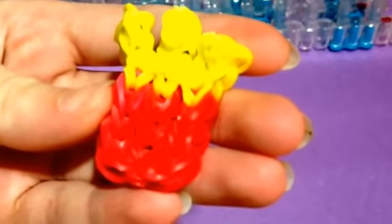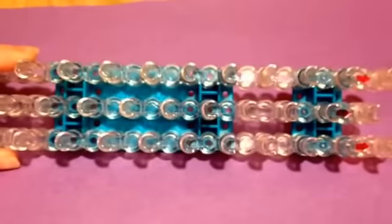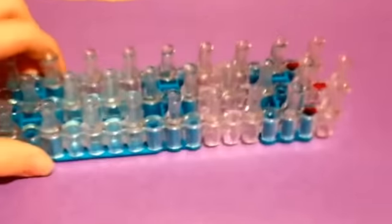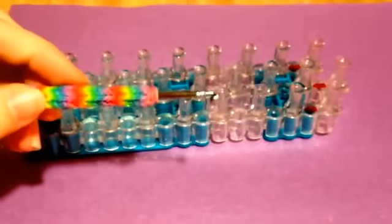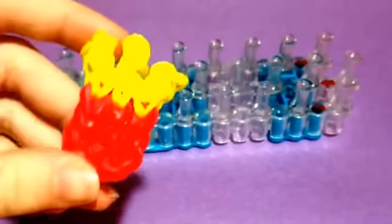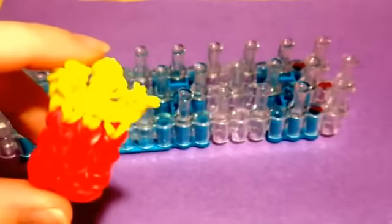For this charm, you will need your rainbow loom in the staggered position, but you want your arrows to be facing towards you, you'll need your hook, and yellow and red rubber bands. So let's get started.